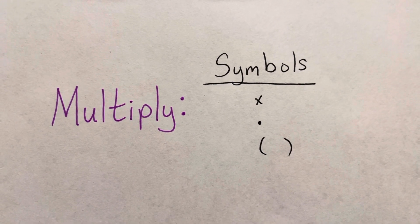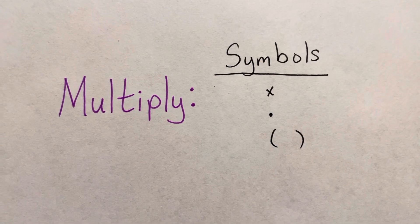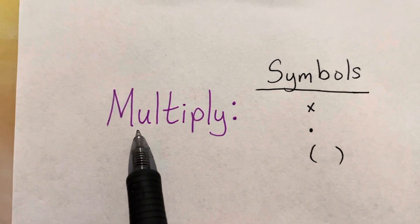So, when you multiply in math, you will see three different symbols, but it always means to multiply.